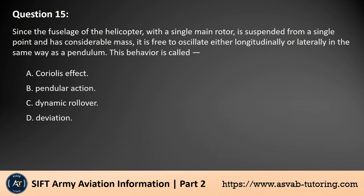Question 15. Since the fuselage of the helicopter, with a single main rotor, is suspended from a single point and has considerable mass, it is free to oscillate either longitudinally or laterally in the same way as a pendulum. This behavior is called: A. Coriolis effect. B. Pendular action. C. Dynamic rollover. D. Deviation. The answer is B. This behavior, where the fuselage is suspended from a single point and can oscillate longitudinally or laterally like a pendulum, is called pendular action. This oscillation occurs due to the helicopter's mass and the way it is supported, allowing it to respond dynamically to changes in motion and external forces.